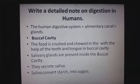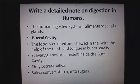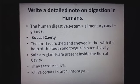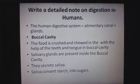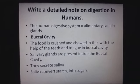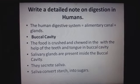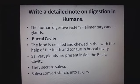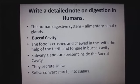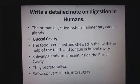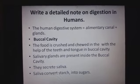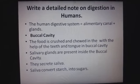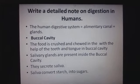The alimentary canal is 9 meters long overall. At various points, some glands are also present. These glands secrete digestive juices which contain enzymes that are very important to convert complex food into simple food. Digestion is a biological process in which complex food is broken down into a simple form, helped by digestive juices secreted by the digestive glands.